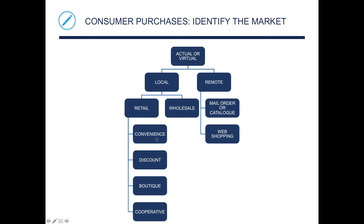Retail gives you convenience, discount, boutique, and cooperative options. Wholesale is where you can go into BJ's and buy in bulk — that's a wholesaler. On the remote side, you can mail order, use a catalog, or do web shopping.